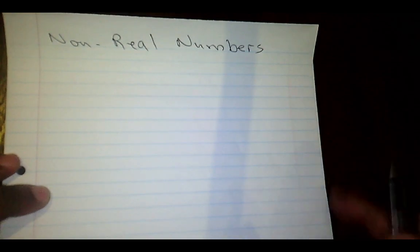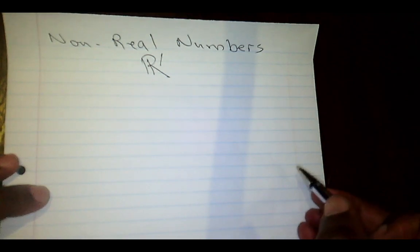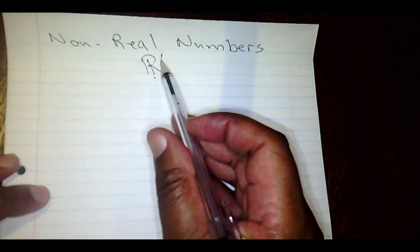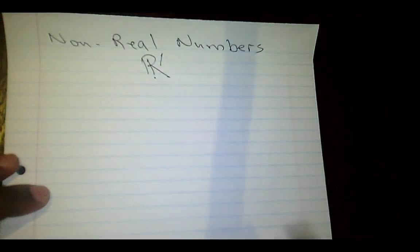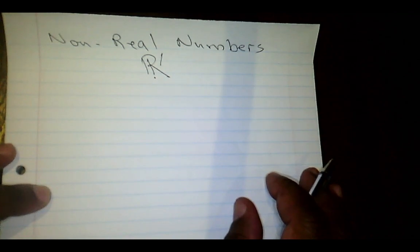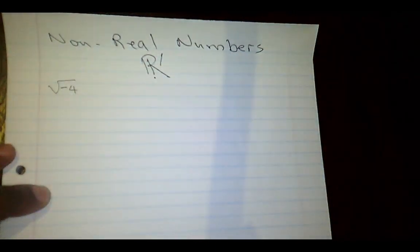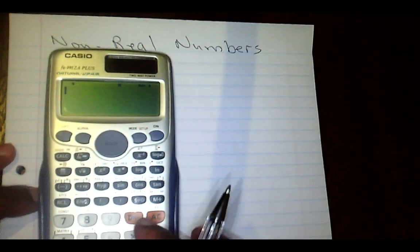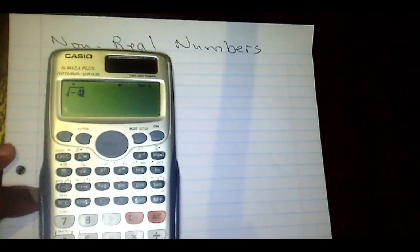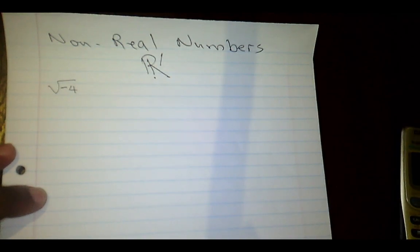We use the symbol R' to represent non-real numbers — R is for the real numbers, so R' means not real. We want to be able to identify non-real numbers. An example of a non-real number is the square root of negative 4. If you calculate this on your calculator, you get a math error. The square root of any negative number is a math error — we do not get the square root of a negative number.